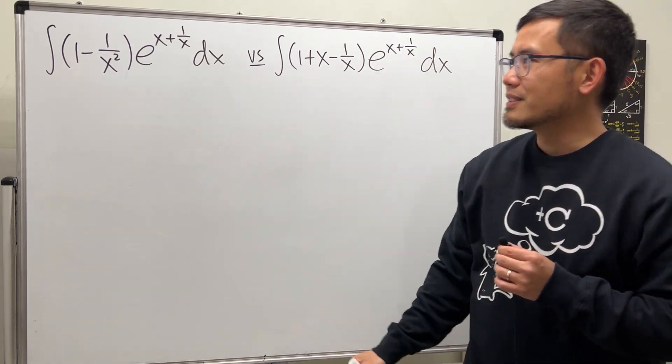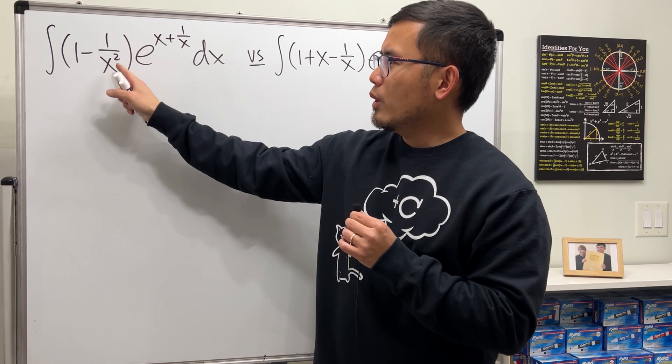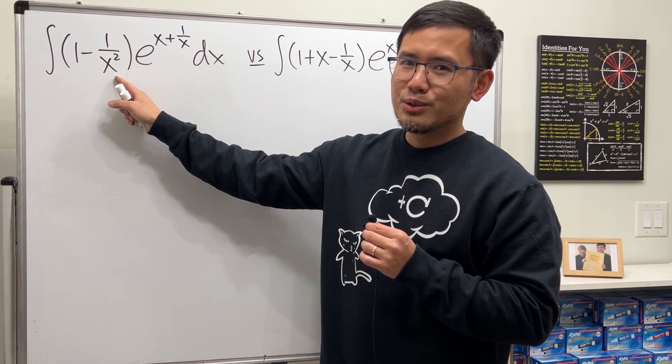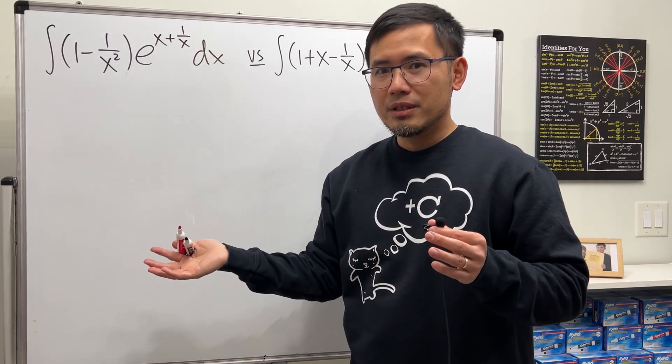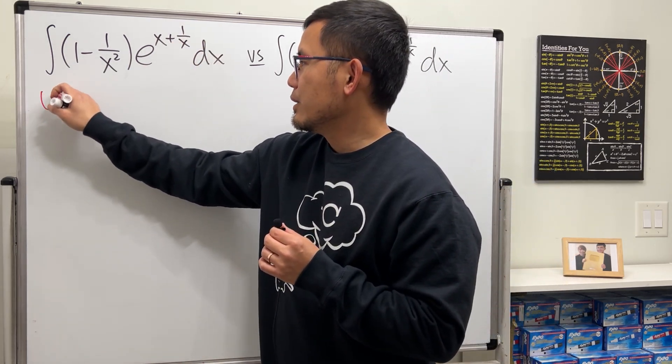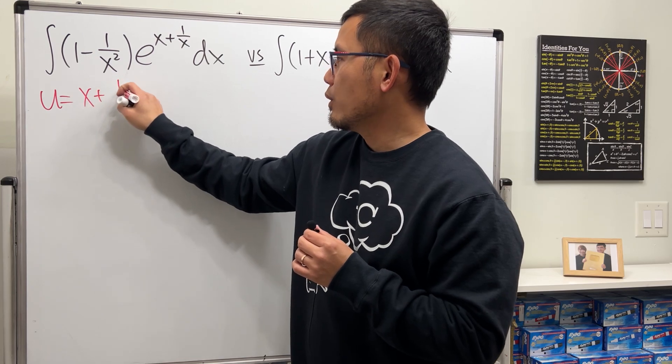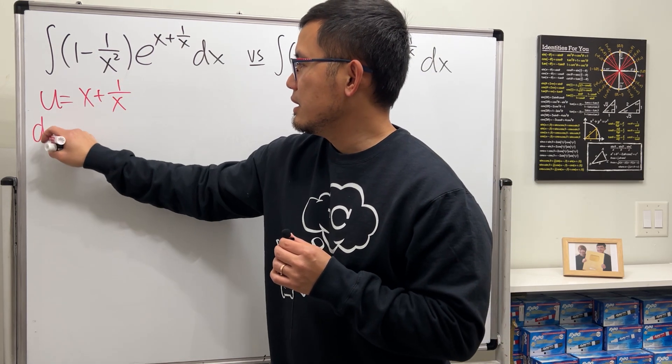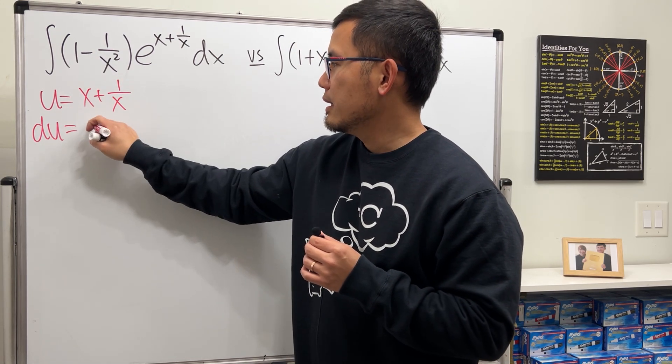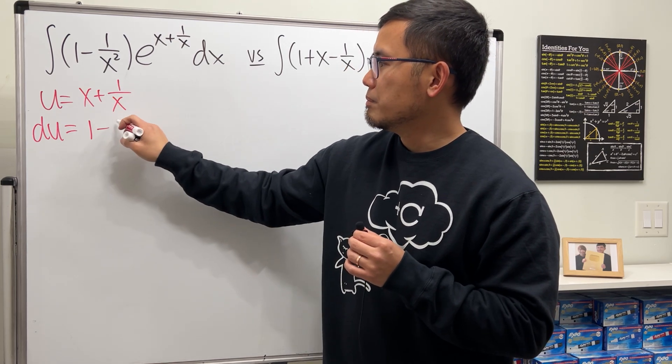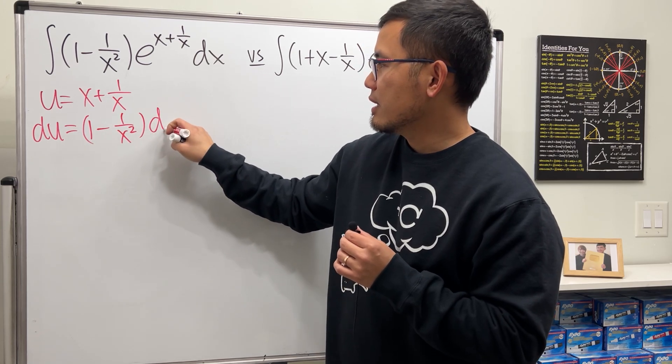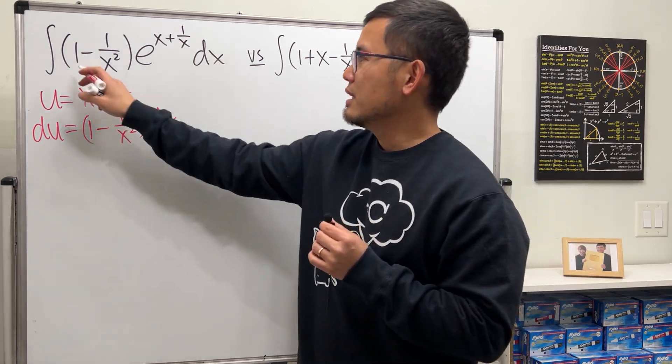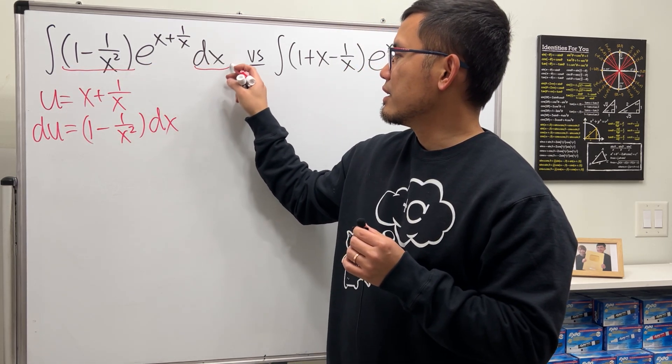So let's finish that first. Well, notice that 1 - 1/x² happens to be the derivative of x + 1/x. So this can be done with u-substitution. Go ahead, let u equal x + 1/x. And then you see du is just 1, and the derivative of this is -1/x². And we have the dx.